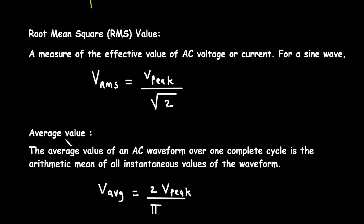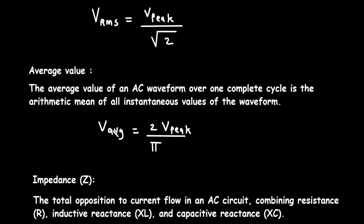Then average value. The average value of an AC waveform over one complete cycle is the arithmetic mean of all instantaneous values of the waveform. The formula for average value is: V_average = (2/π) × V_peak.